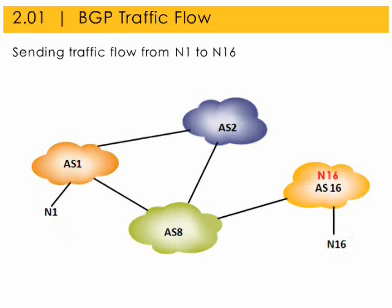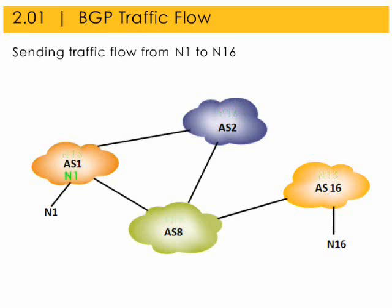AS16 must originate and announce N16 to AS8. AS8 must accept N16 from AS16, then announce N16 to AS1 or AS2 or both. AS2 can accept N16 from AS8 and announce N16. AS1 must accept N16 from AS8 or AS2 or both — now N1 has a route to N16. For two-way traffic flow, AS1 must originate and announce N1 to its peers and the process must repeat in reverse.